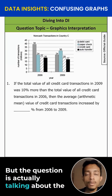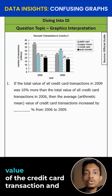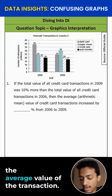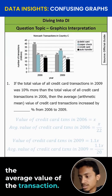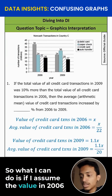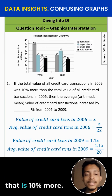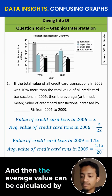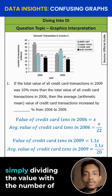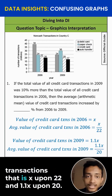But the question is actually talking about the value of the credit card transactions and the average value of the transaction. So what I can do is if I assume the value in 2006 as X, then the value in 2009 will be 1.1X — that is 10% more. The average value can be calculated by simply dividing the value by the number of transactions: X upon 22, and 1.1X upon 20.